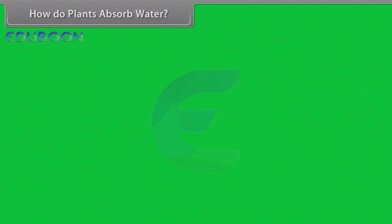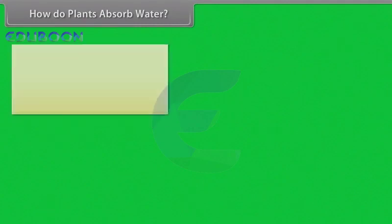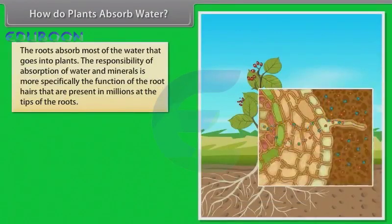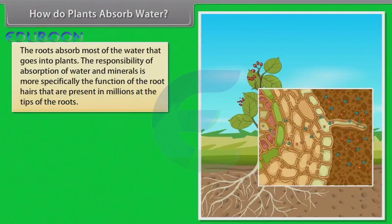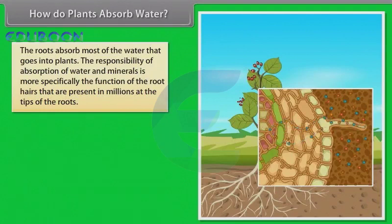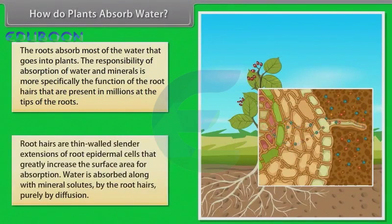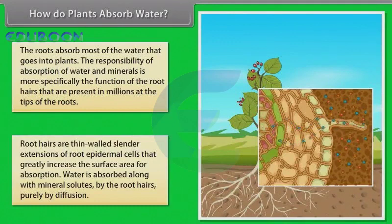Now let us understand how plants absorb water. The roots absorb most of the water that goes into plants — that is why we give water to the soil and not on the leaves. The responsibility of absorption of water and minerals is more specifically the function of the root hairs that are present in millions at the tips of the roots. Root hairs are thin-walled, slender extensions of root epidermal cells that greatly increase the surface area for absorption. Water is absorbed along with mineral solutes by the root hairs purely by diffusion.